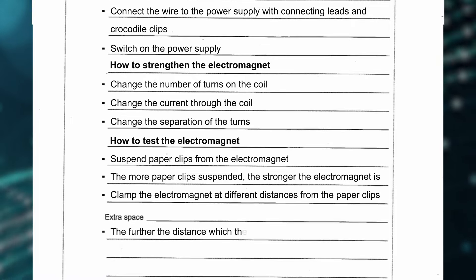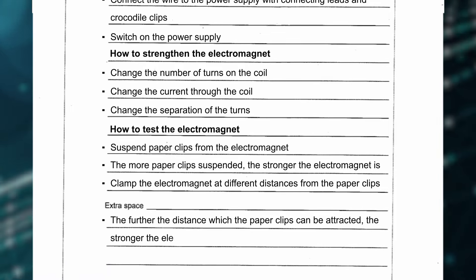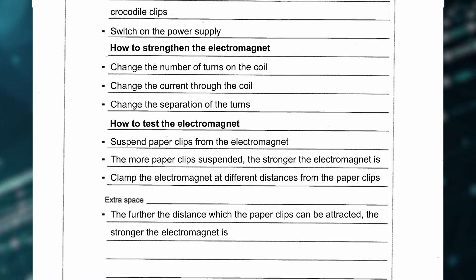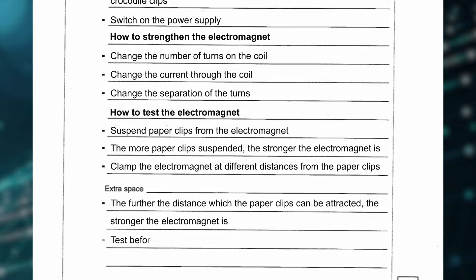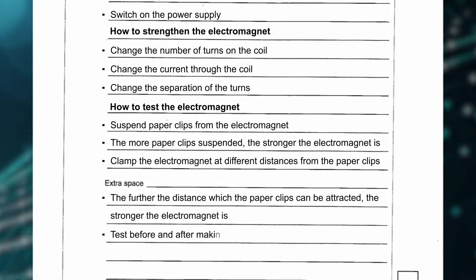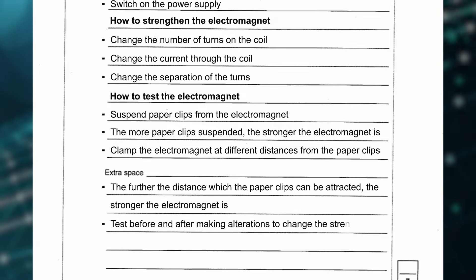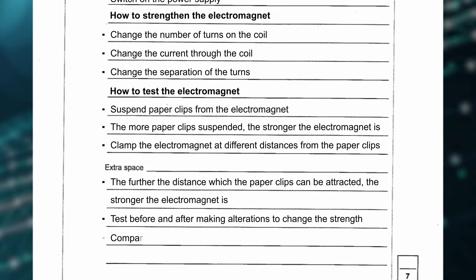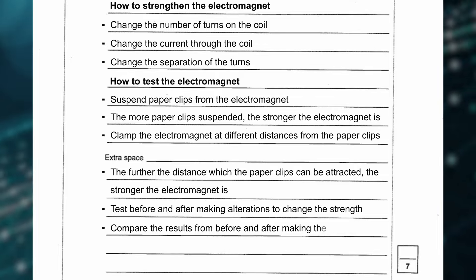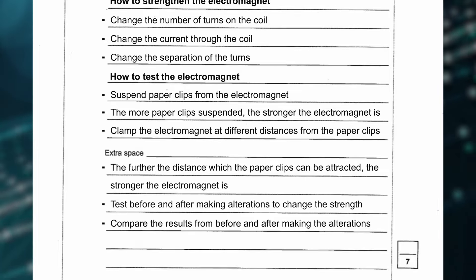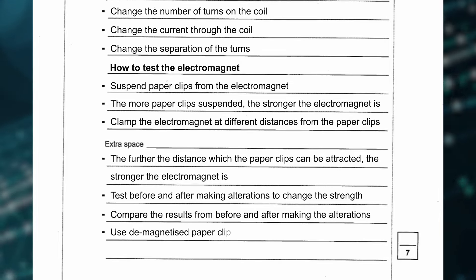The further the distance at which the paper clips can be attracted, the stronger the electromagnet is. Test before and after making alterations to change the strength, compare the results from before and after, and use demagnetised paper clips.